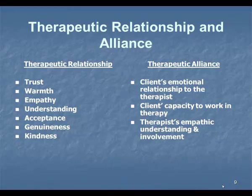The therapeutic alliance relies on these elements but it's the working component of the relationship. It's the client's emotional relationship to the therapist — how well does the client trust you, work with you, believe in you. The client's capacity to work in therapy — how psychologically minded is the client? If the client is fairly psychologically minded, you're going to be more successful. If they're able to stop, reflect on what's going on, think about their thinking, reflect on their feelings, and make a decision, you're going to have more successful therapy.